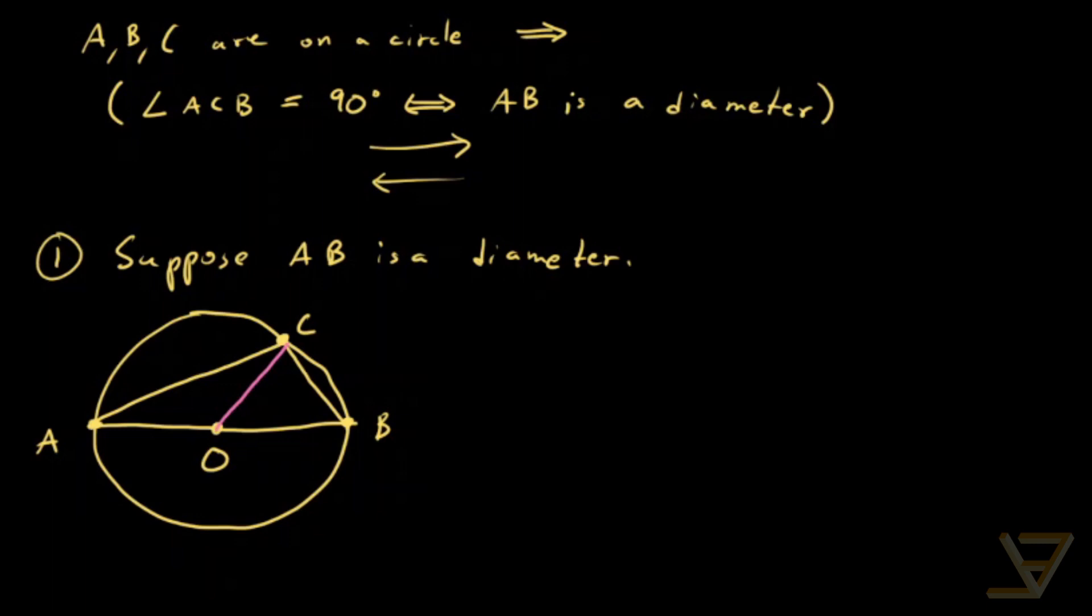So what I want you to notice is that AO, BO, and CO are all radii, so they have the same length. And as a result, we have two isosceles triangles, AOC and BOC.